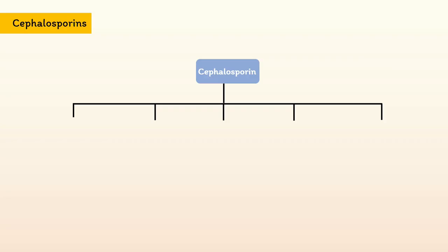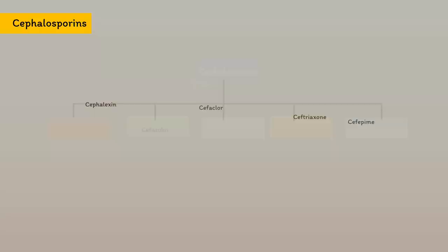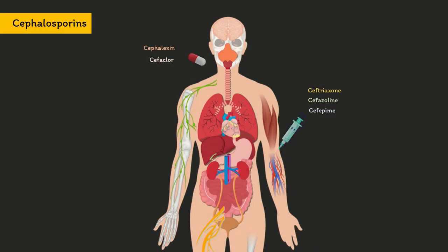Cephalosporins include cephalexin, cefazolin, cefaclor, ceftriaxone, and cefepime. Among these, cephalexin and cefaclor are absorbed orally, while cefazolin, ceftriaxone, and cefepime are given intravenously. They are well distributed in extracellular fluid, and whether they cross the blood-brain barrier depends upon the generation to which the cephalosporin belongs.